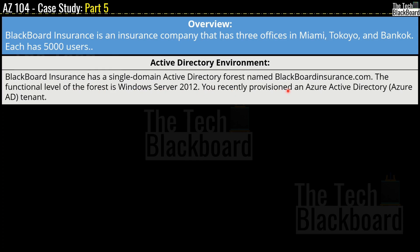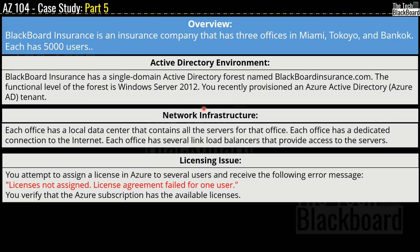You recently provisioned an Azure Active Directory tenant. For network infrastructure, each office has a local data center containing all the servers for that office. Each office has a dedicated connection to the internet and several link load balancers that provide access to the servers. Moving on, we have some licensing issues — you attempt to assign a license in Azure to several users and receive an error message.